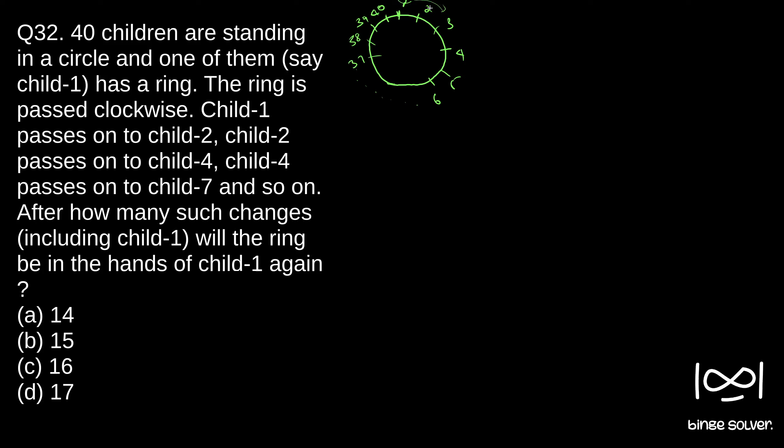So first person gets the ring first and then it is passed down to second person, second person passes on to fourth person, fourth person passes on to seventh person. So first person passes on to 2, 2 passes on to 4, 4 passes on to 7. So the pattern here is like if you see plus 1, plus 2, plus 3. So next person will be plus 4, so that is 11. 7 will give the ring to 11.